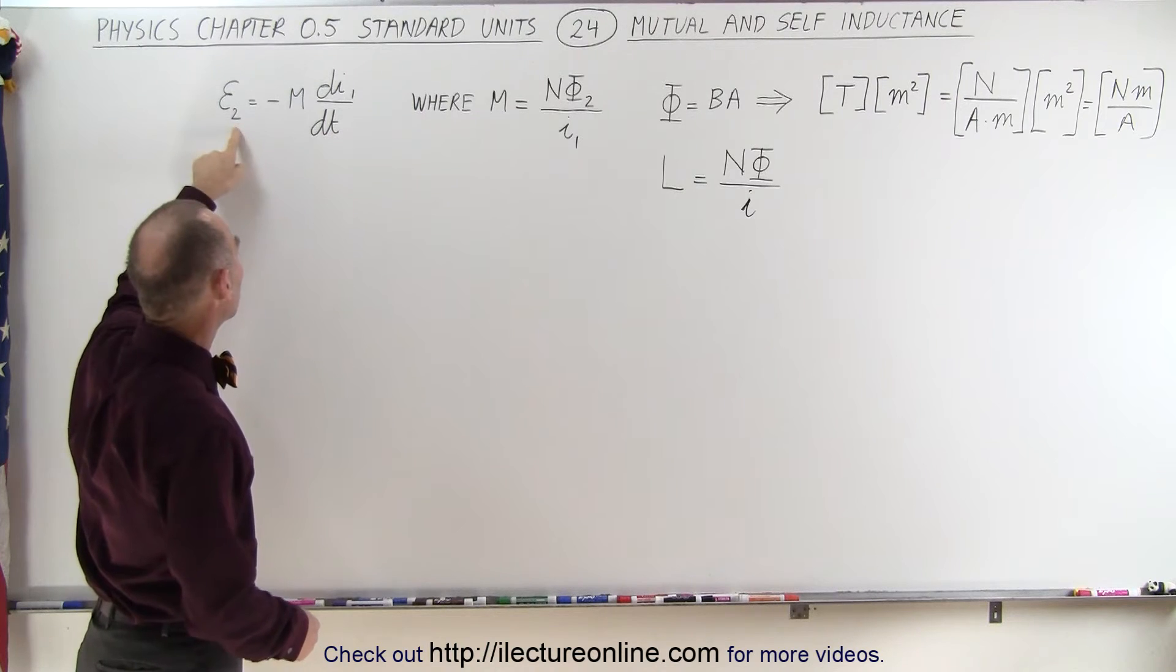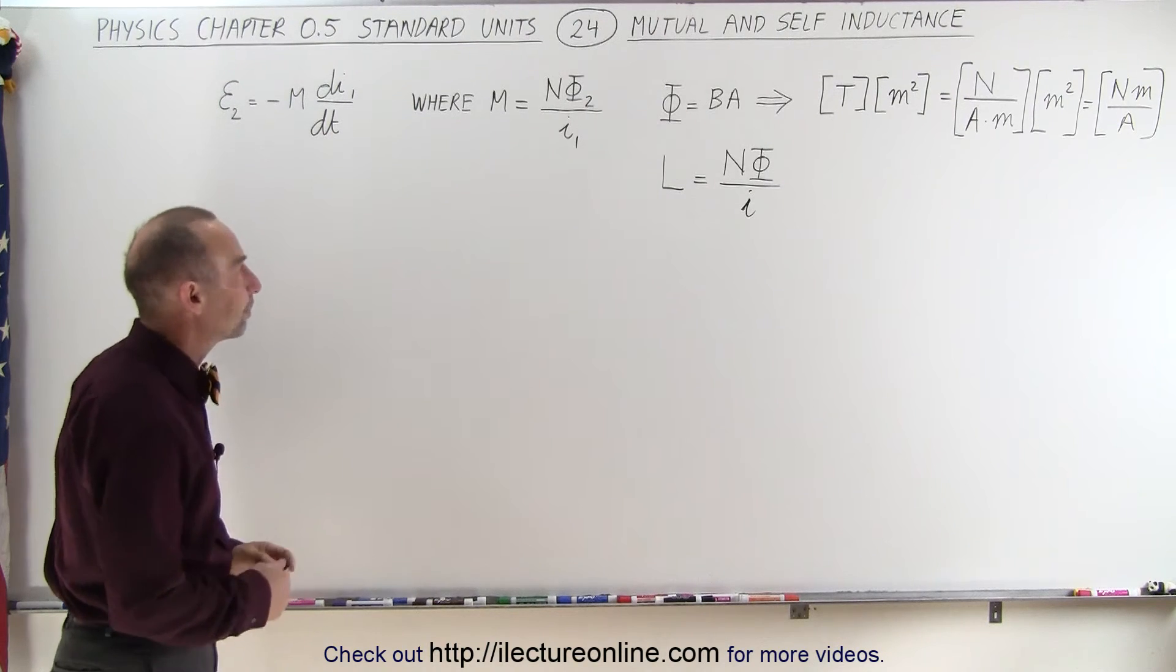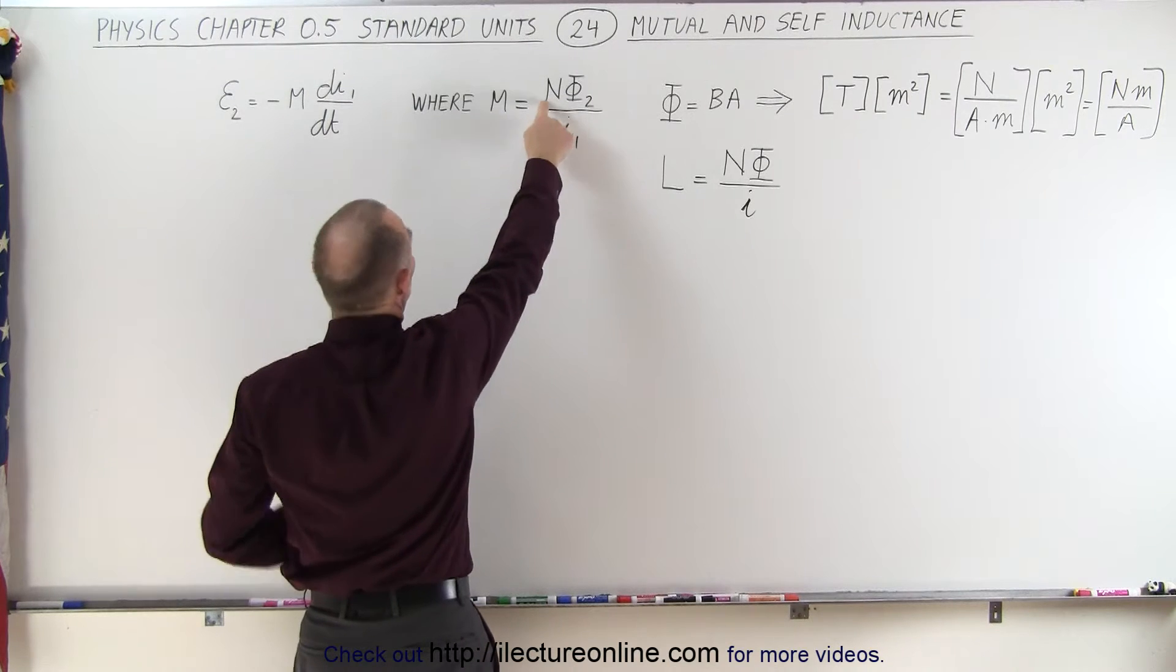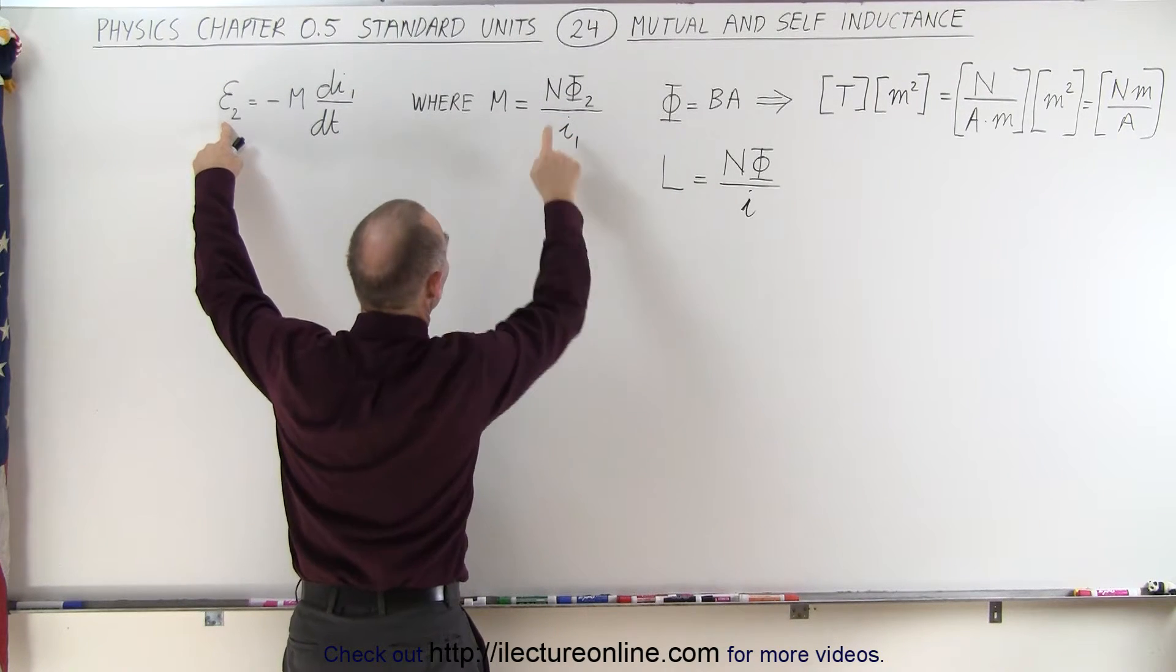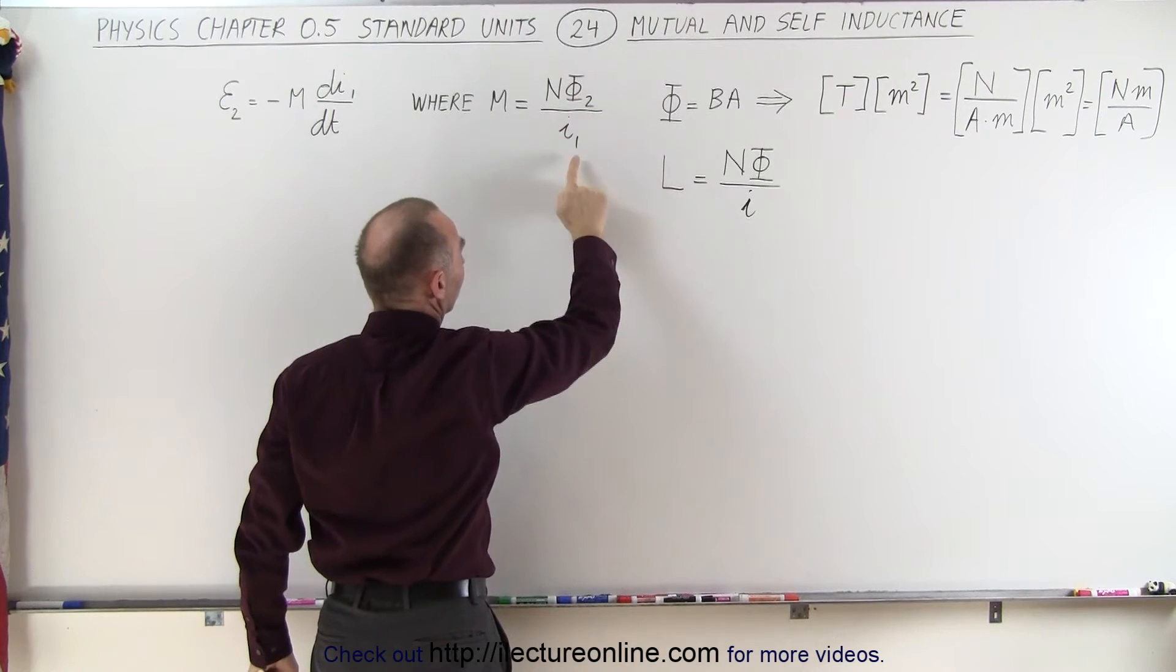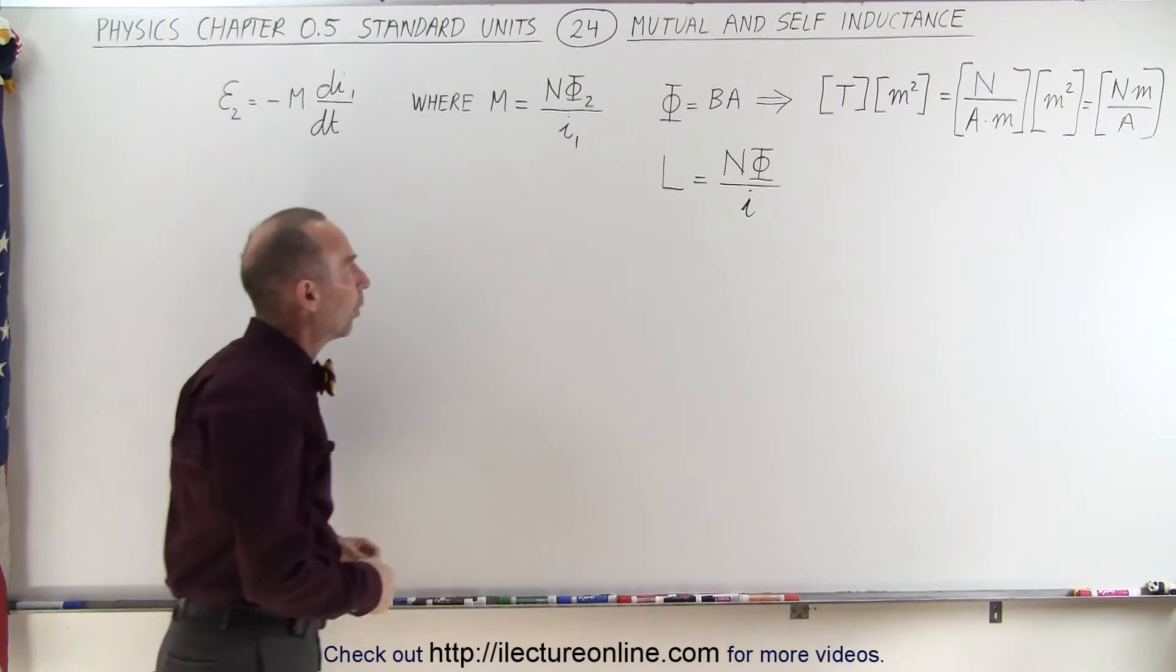One being the other coil, two being the coil that we're concerned with. The mutual inductance can be defined as the number of turns in the coil here, in coil two, the flux going through coil two, we're talking about the magnetic flux, and the current from coil one.